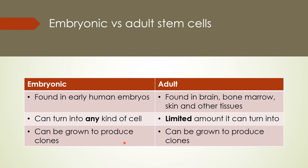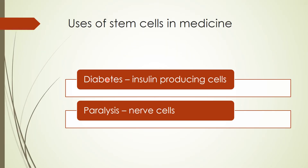Both embryonic and adult stem cells can be grown to produce clones, which is a similarity. They can be used to treat leukemia, and also diabetes — some people with diabetes don't have the cells required to produce insulin, and stem cells can be an effective treatment, although they are still quite new at the moment. They can also be used for paralysis. It's worth learning these two uses as they've come up in multiple choice questions.